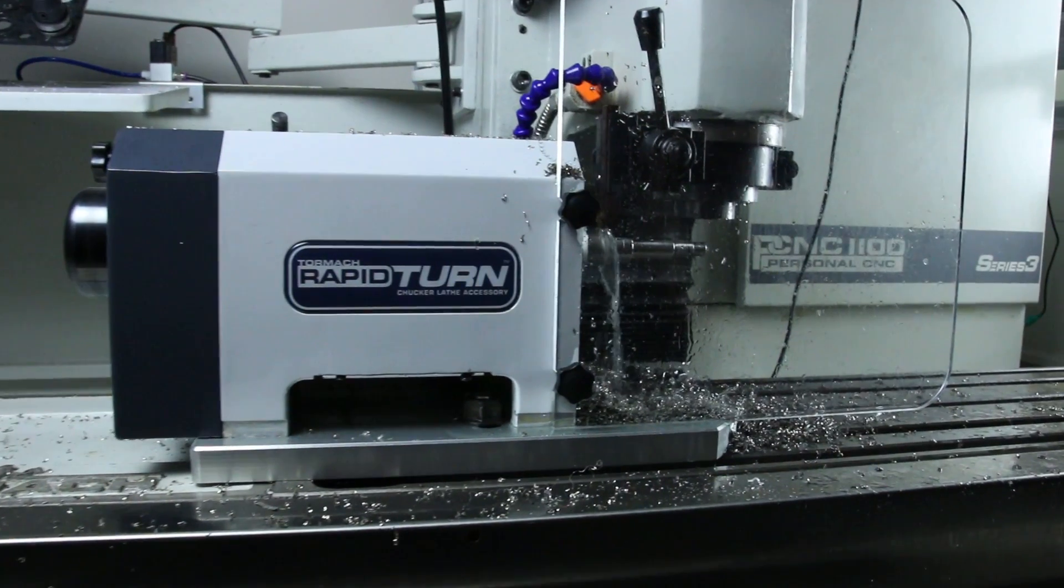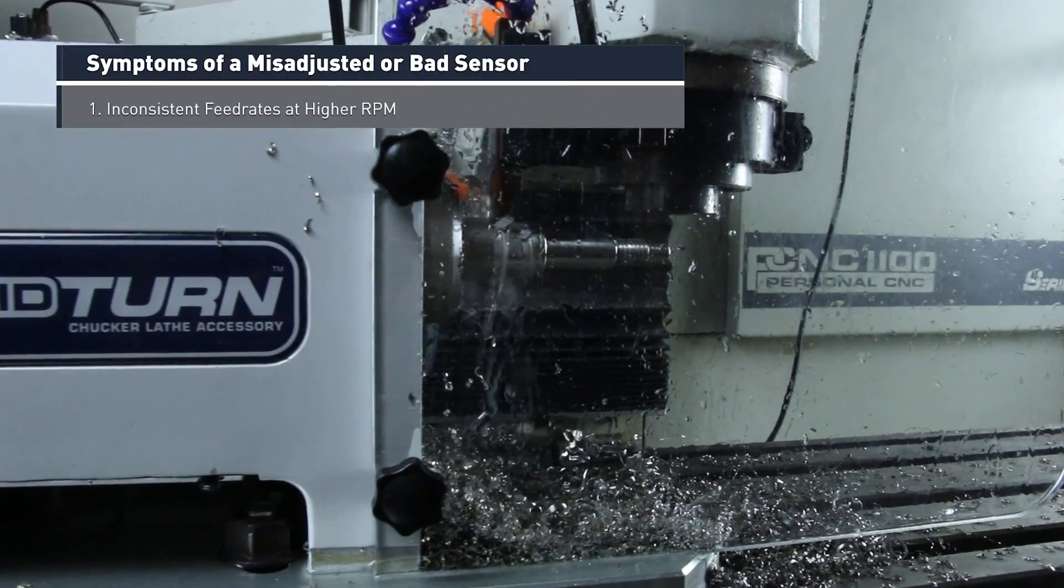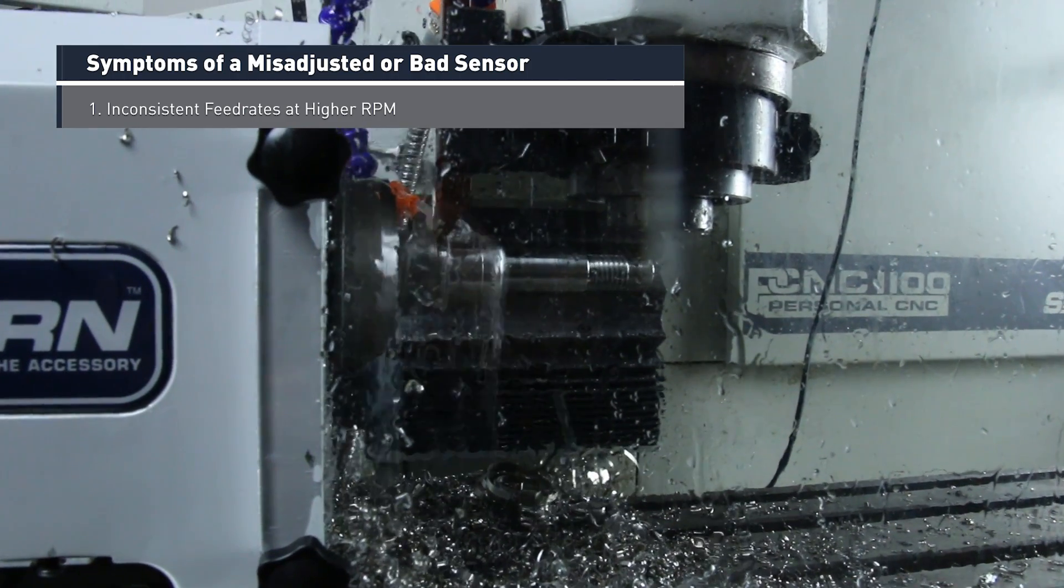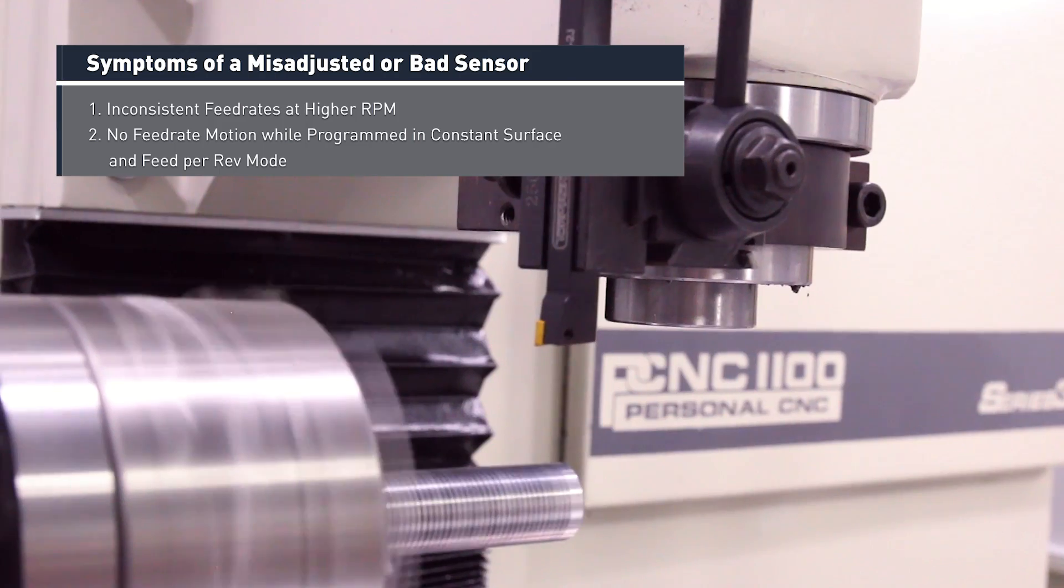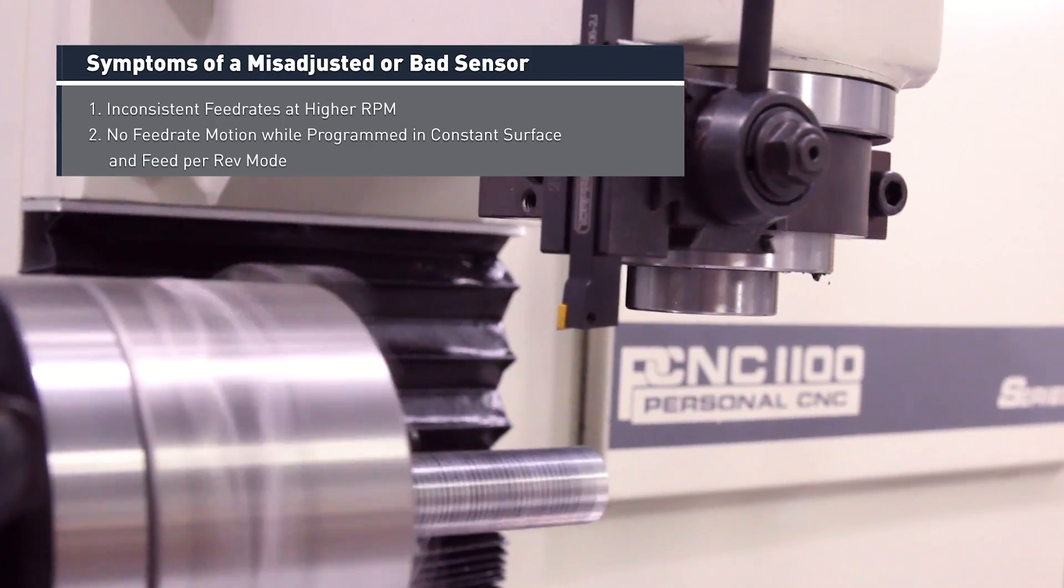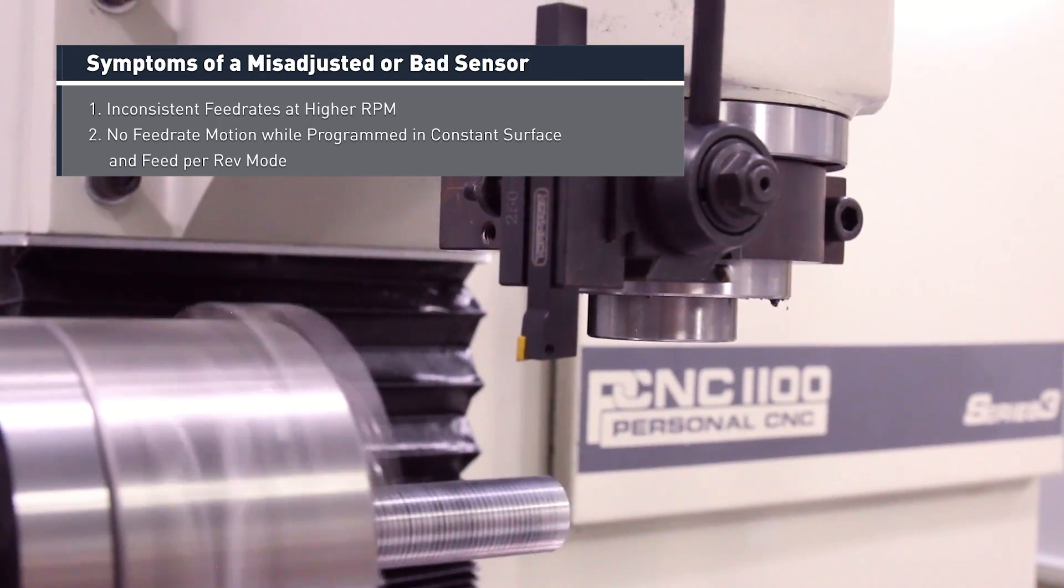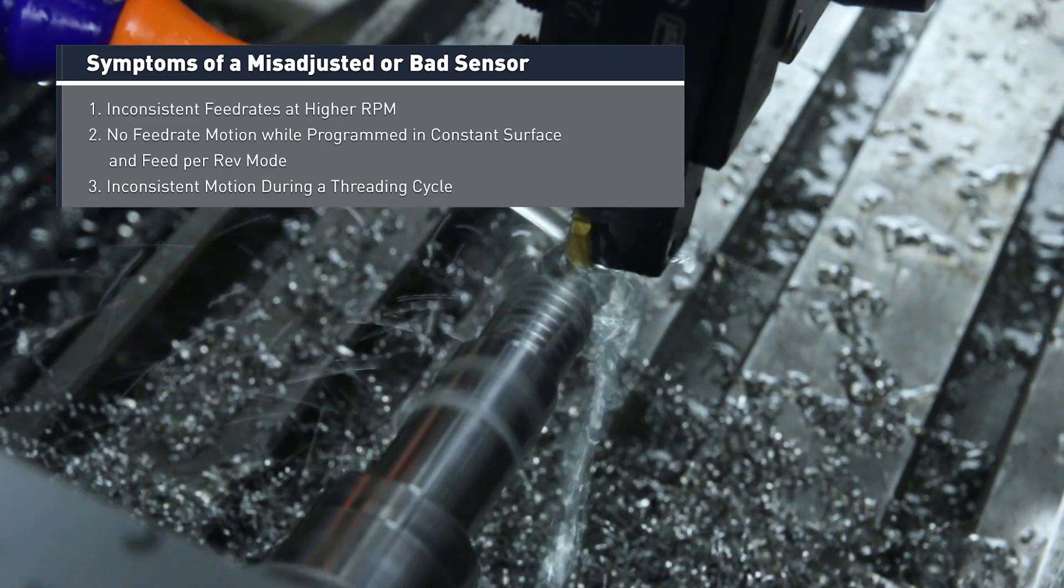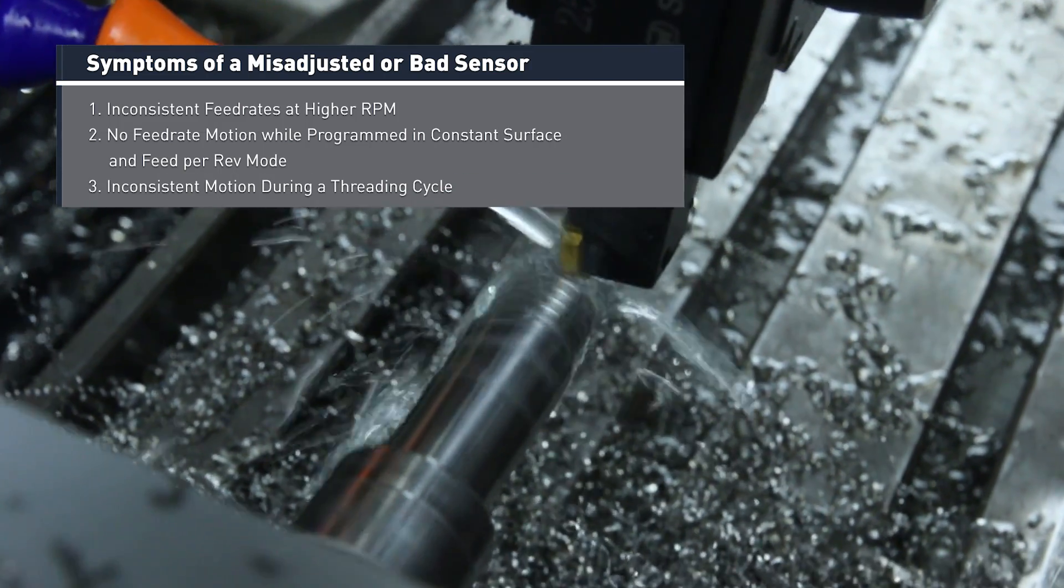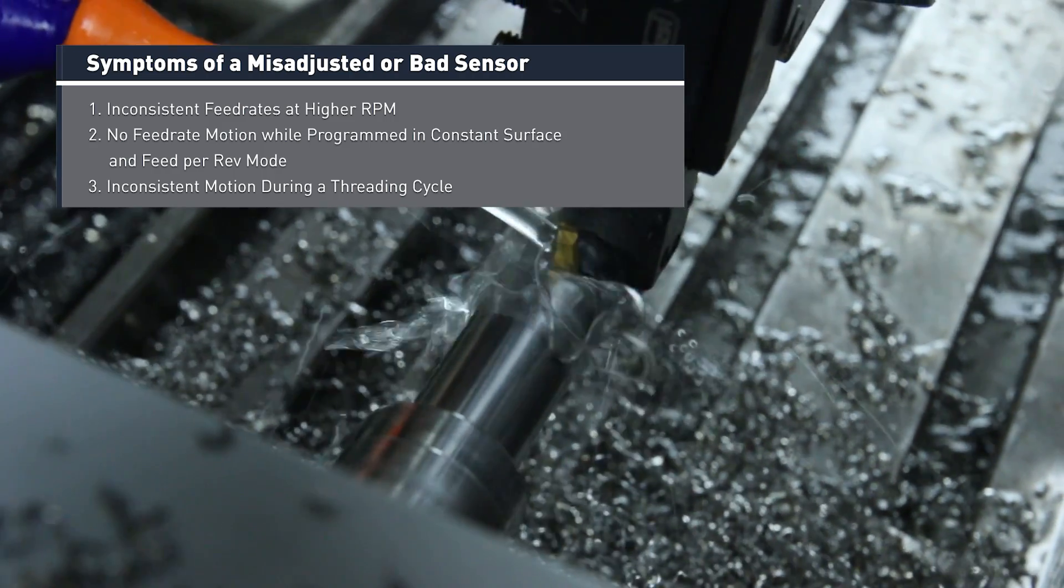The symptoms of a misadjusted sensor or a bad sensor are inconsistent feed rates at higher RPM. Anything above 1500 RPM can really start to show a problem. If you don't get any feed rate motion while you're programmed in constant surface and feed per rev mode, or if you just see inconsistent feed motion during a threading cycle, this would all indicate the need to check your sensor adjustment.